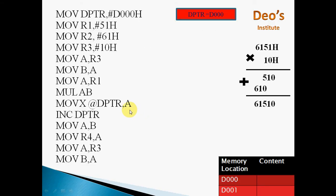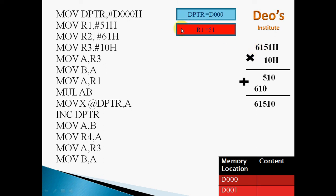Now we will see the actual program. The first instruction is MOV DPTR, #0D000H. DPTR is the data pointer, a 16-bit register which holds the memory address. D000H is the memory address where we will store our multiplication result. Next instruction is MOV R1, #51H — the first number is a 16-bit number. Since all registers in 8051 are 8-bit, we need two registers: 51H is stored in R1 and 61H is stored in R2. Next instruction is MOV R2, #61H.